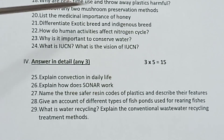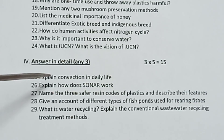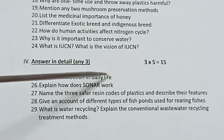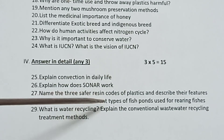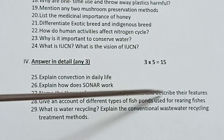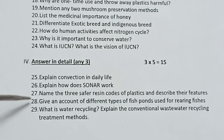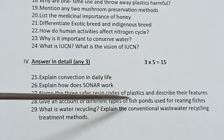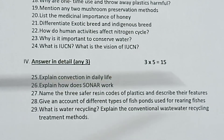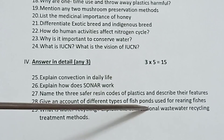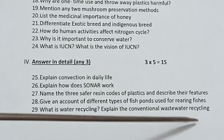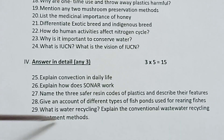Question 24: What is the vision of IUCN? Question 25: Explain convection in daily life. Question 26: Explain how does sonar work. Question 27: Name the 3 safer resin codes of plastic and describe their features. Question 28: Give an account of different types of fish ponds used for rearing fishes. Question 29: What is water cycling? Explain the conventional wastewater recycling treatment methods. All the best!